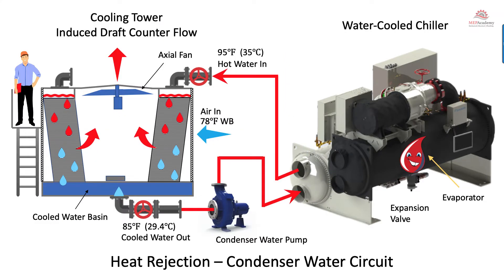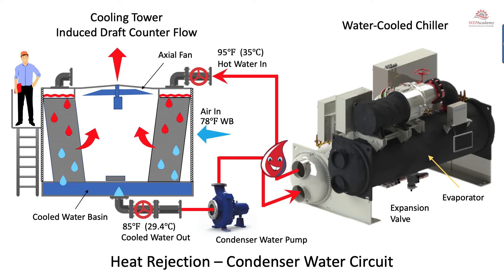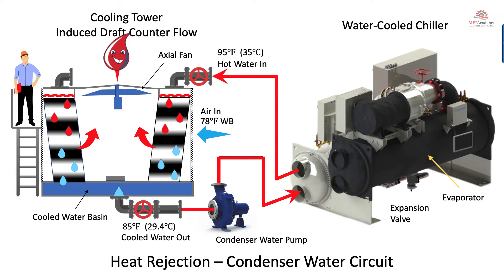The heat arrives via the chilled water — picked up from the room and brought to the chiller. That heat causes the liquid refrigerant on the low side in the evaporator to evaporate, absorbing the heat. It's then taken through the compressor and compressed to a high-side vapor, which passes to the condenser, into the condenser water, and out to the cooling tower — that's how heat is rejected from the building, traveling from the chilled water circuit through the refrigerant circuit in the chiller to the condenser water circuit and out of the building.